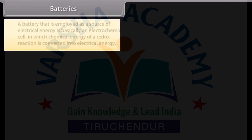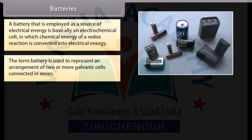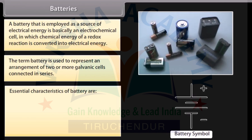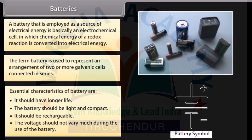A battery employed as a source of electrical energy is basically an electrochemical cell in which chemical energy of a redox reaction is converted into electrical energy. The term battery represents an arrangement of two or more galvanic cells connected in series. Essential characteristics of a battery are: longer life, light and compact design, rechargeability, and voltage that does not vary much during use.